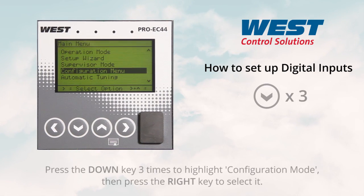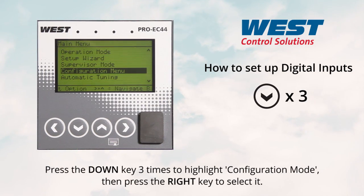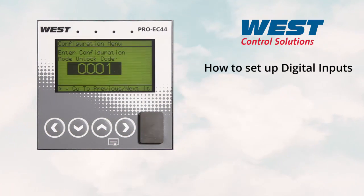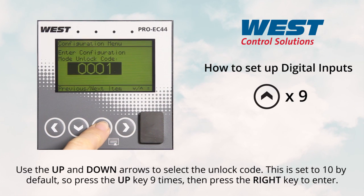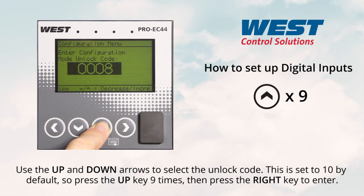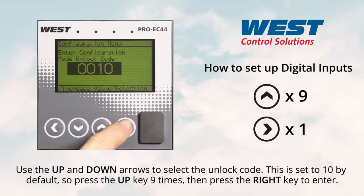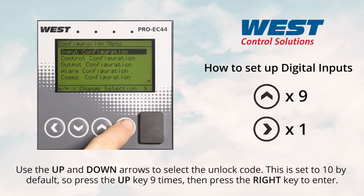Press the down key three times to highlight configuration mode, then press the right key to select it. Use the up and down arrows to select the unlock code. This is set to ten by default, so press the up key nine times, then press the right key to enter.